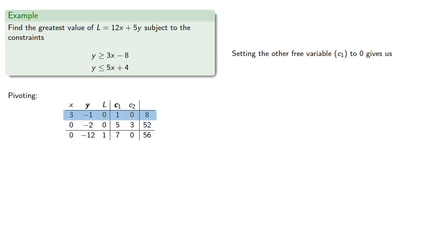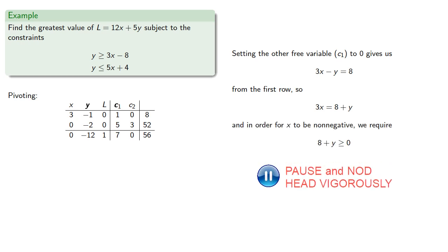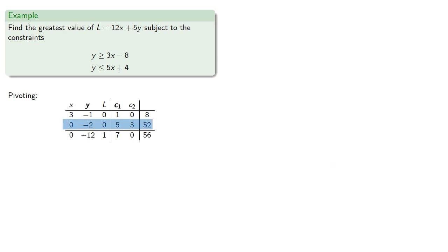Setting our free variable to zero gives us, from the first row, and in order for x to be non-negative we require. But this will be true for any value of y. And in the second row we have, and again any value of y will make C2 non-negative.